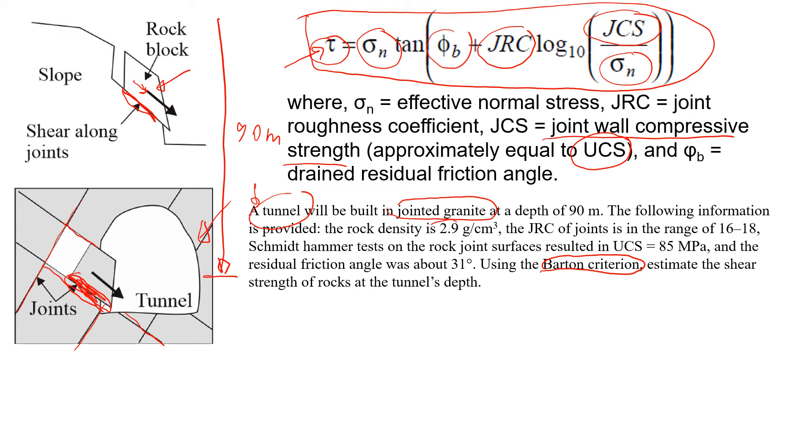What we also know is that the density of the rock, it's granite, is given here - 2.9 grams per cubic centimeter. JRC, I guess when they examined rock blocks, they noticed that it was pretty rough, so JRC was in this range from 16 to 18, which is really pretty high.